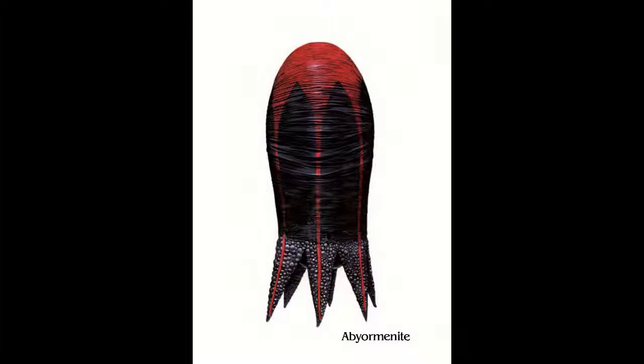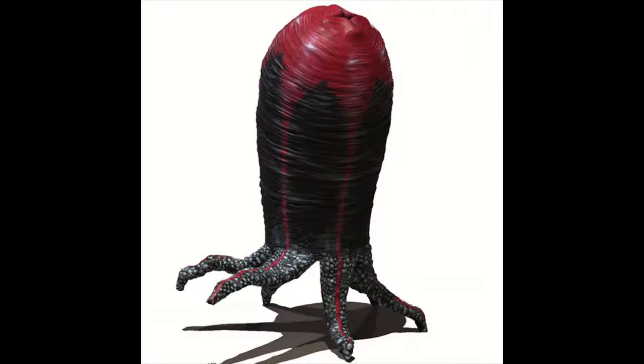Small, delicate, manipulating tendrils can be extended from the tip of each tentacle and are retracted when the being is walking. Abjormenites see by means of high-frequency sound reflection.